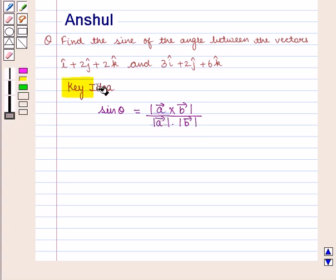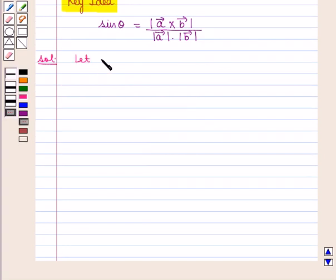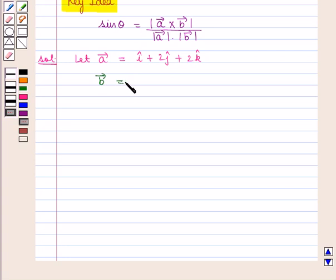With this key idea, let us proceed with the solution. Let vector A be given by i cap plus 2 j cap plus 2 k cap, and vector B be given by 3 i cap plus 2 j cap plus 6 k cap.